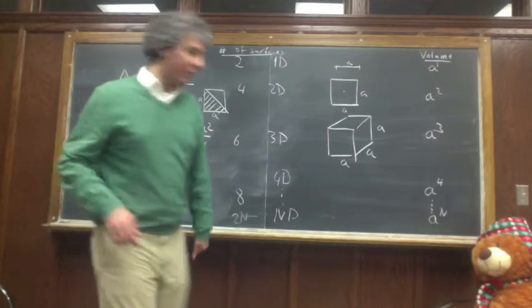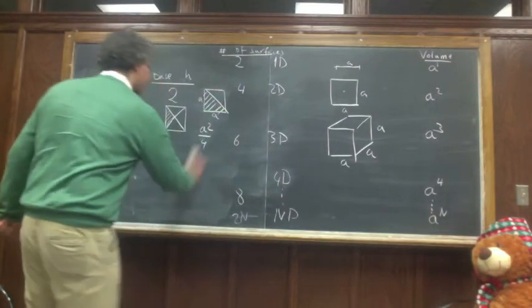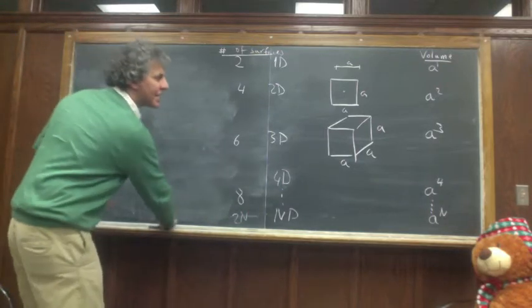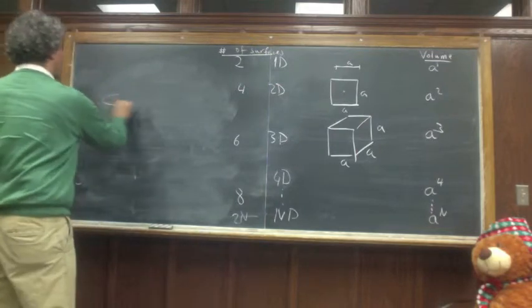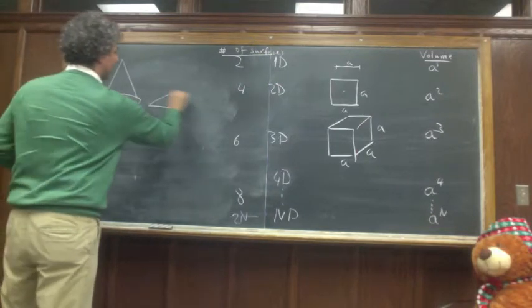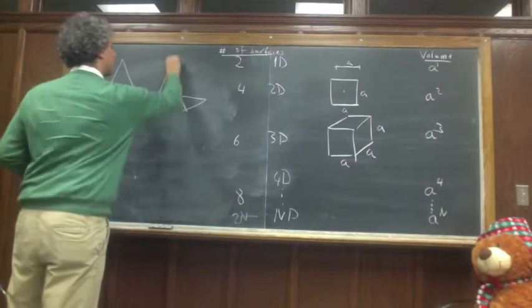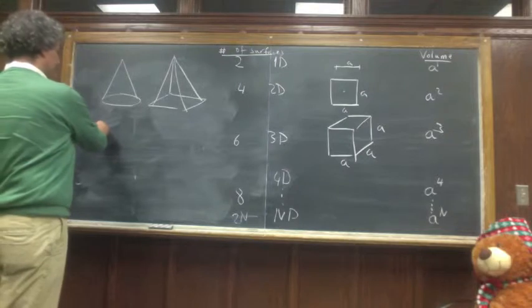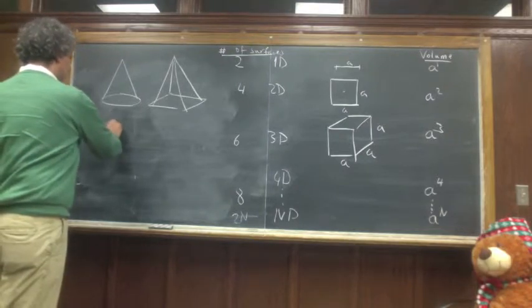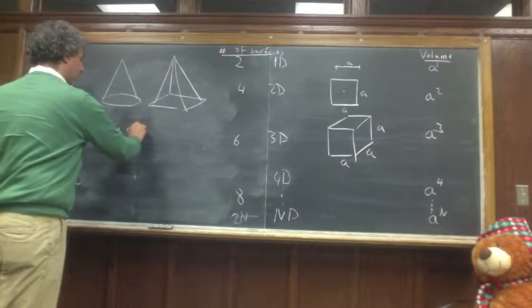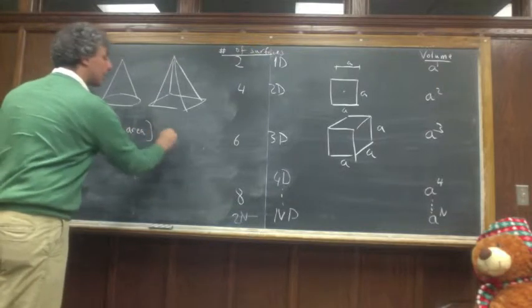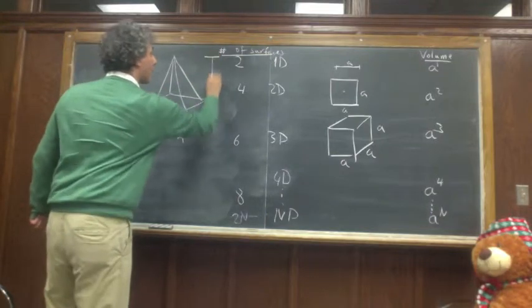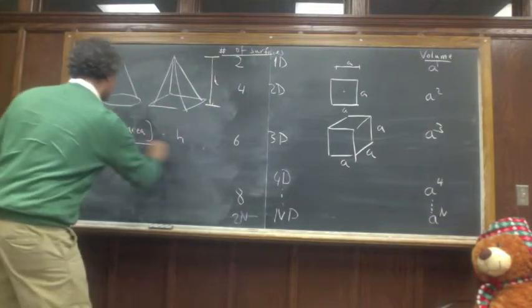So let's do the same derivation in three dimensions. The object we can have here can be a cone or something like a pyramid. In all cases, the formula is base area times height divided by three.